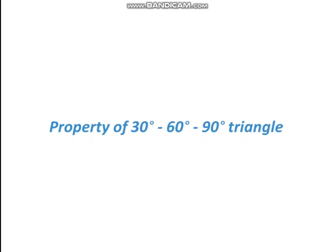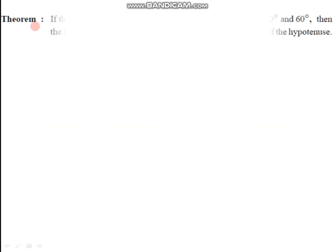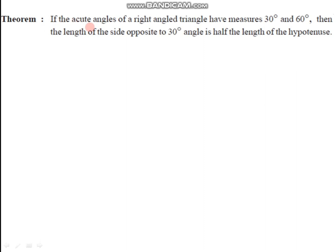Hello students, let us prove today the property of the 30-60-90 degree triangle. First of all, let us have the statement of the theorem: if the acute angles of a right-angled triangle have measures 30 degrees and 60 degrees, then the length of the side opposite to 30 degrees is half of the length of the hypotenuse. This is the first part of the theorem.